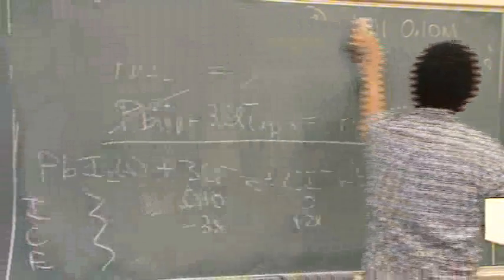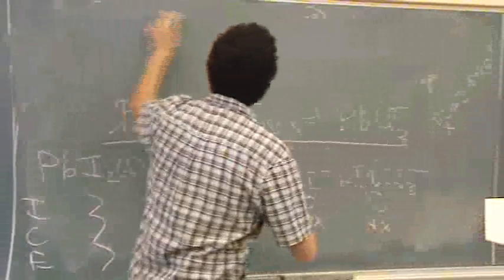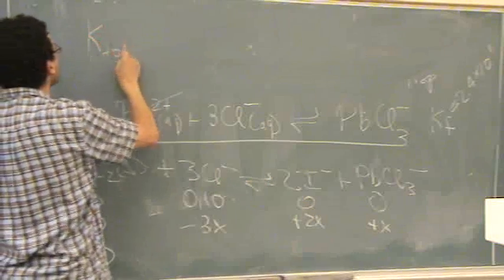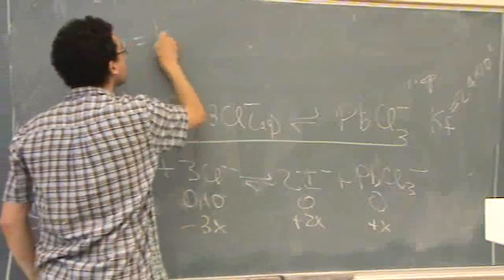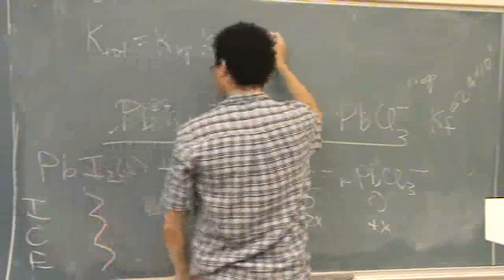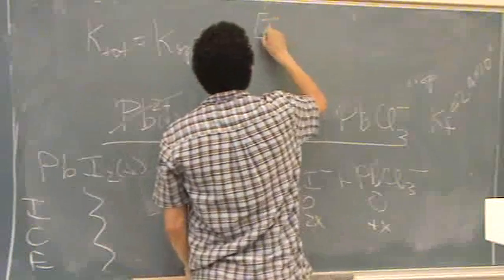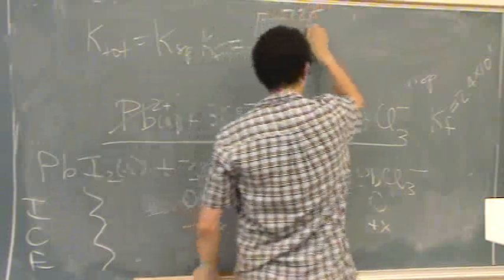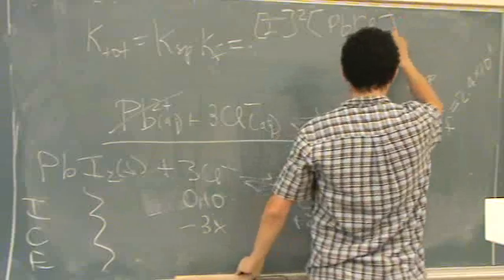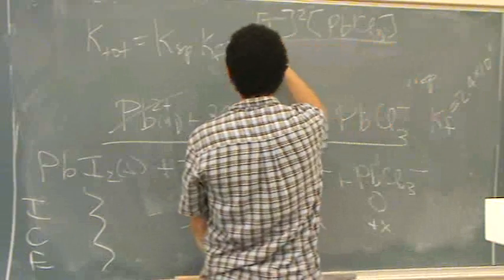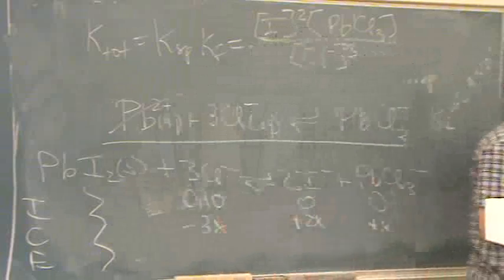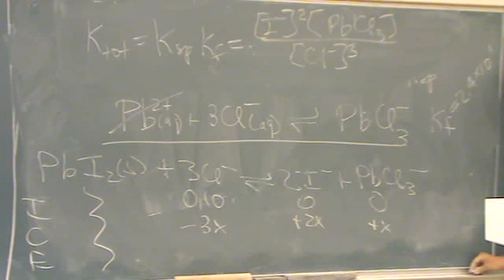I'll erase the top for a second, so you'd go K total equals, in this case, Ksp times Kf, which is equal to the products, I minus squared times lead chloride, all divided by chlorine minus cubed, and you put in numbers.